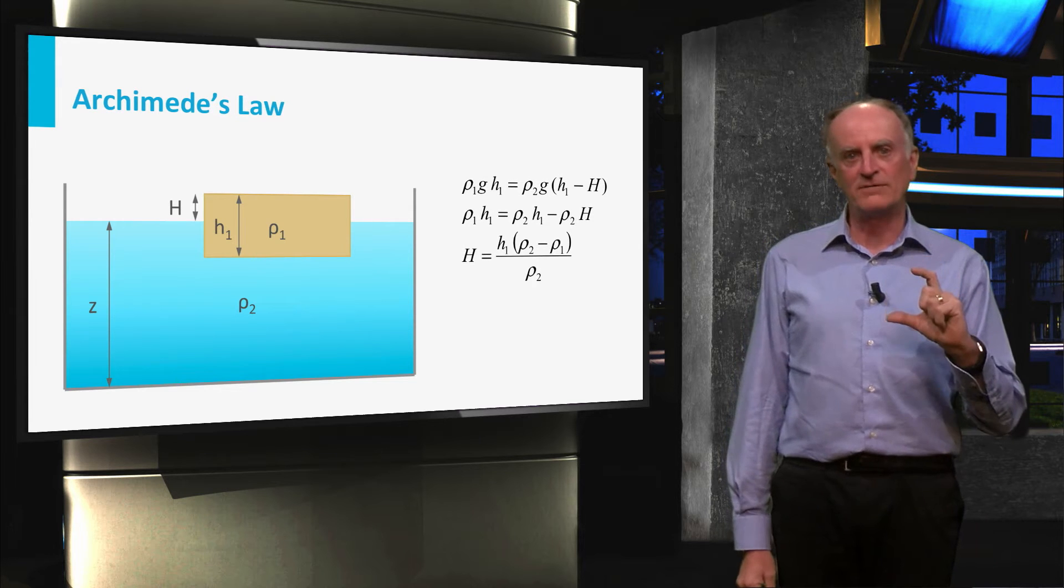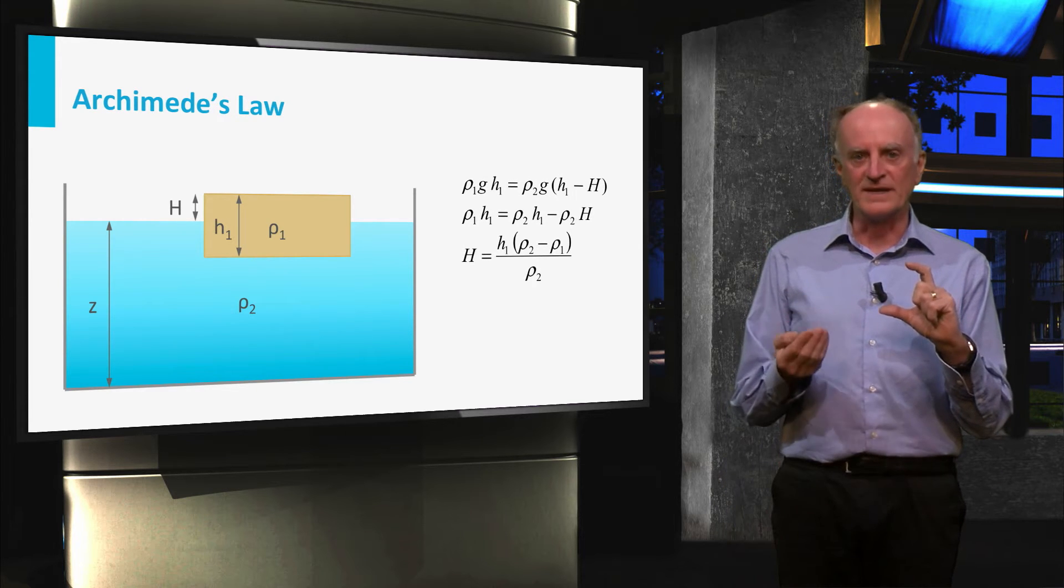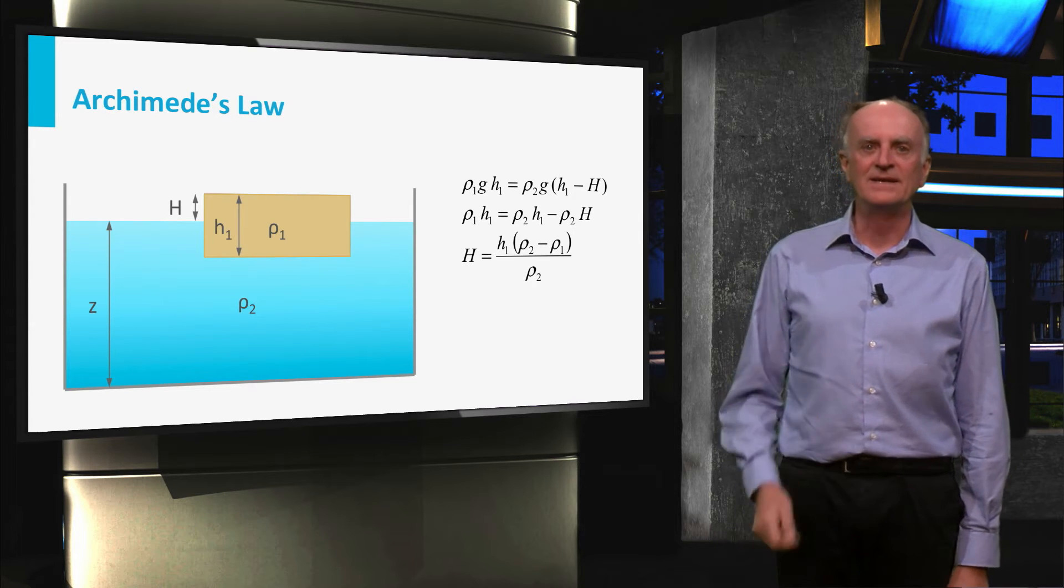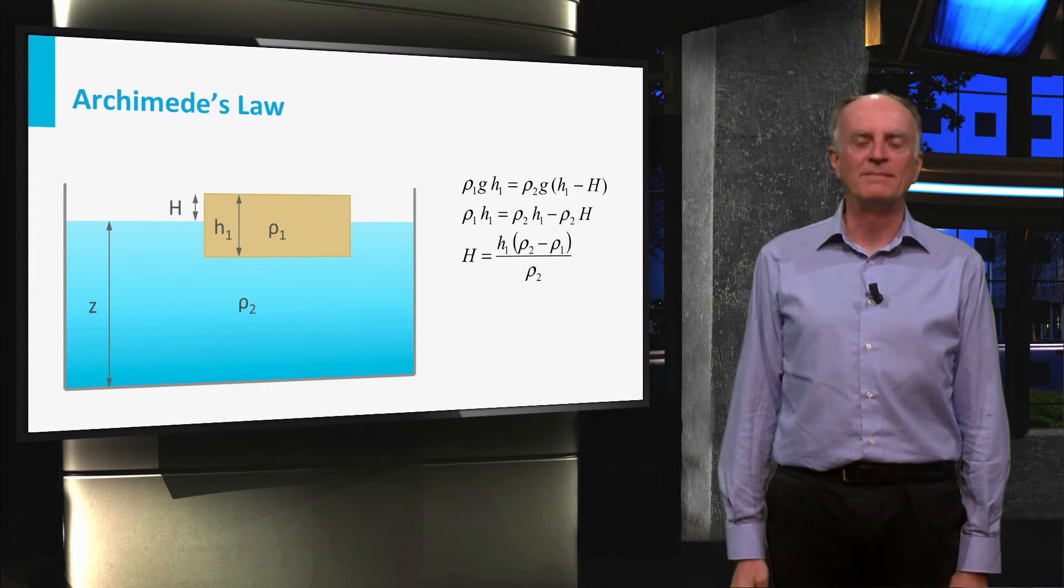Setting the weight of the floating body equal to that of the displaced fluid, you can extract H, which corresponds to the height of the top of the block above the fluid.